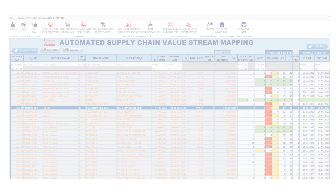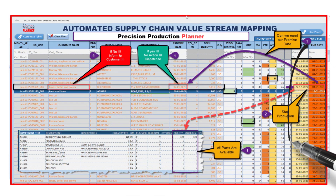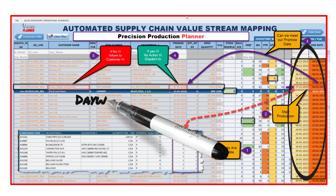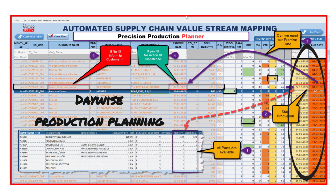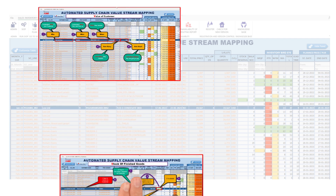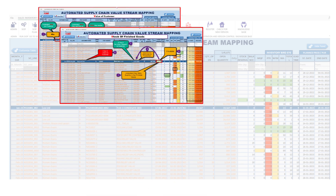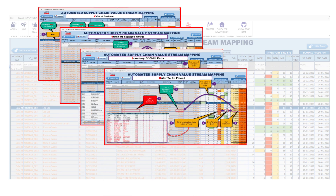Step six: Precision in production planning and scheduling. Finally, the core of our application — enabling you to plan and schedule your production with unmatched precision. This step ensures optimal utilization of resources and timely delivery of products. Implementing these six steps doesn't just promise efficiency — it delivers a transformation in the way you manage your supply chain.